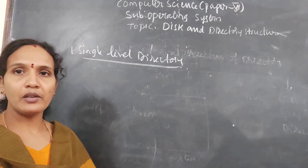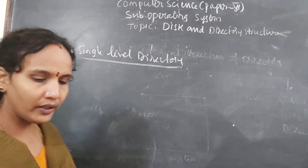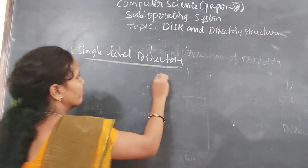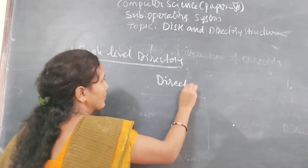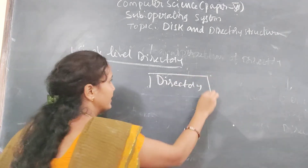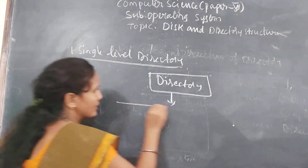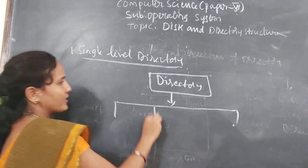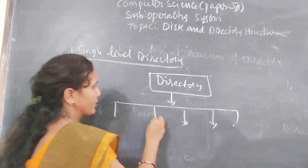The first one is Single Level Directory. What is a single level directory? Here we have one directory, and inside that directory we don't have subdirectories — we only have files directly.